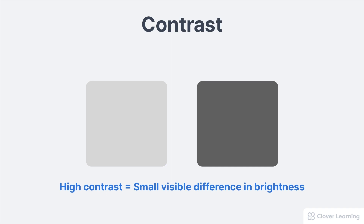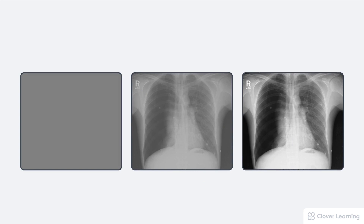Image contrast in radiography is critically important. Contrast is how our eyes see different structures in a radiograph. For example, the only difference in this series of images is the contrast. The first image has no contrast at all — all structures in the radiograph are the same brightness level. It's all the same shade of gray.